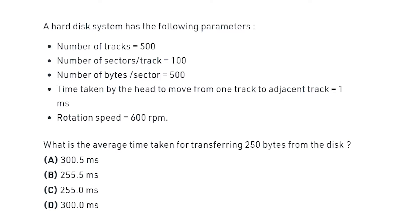A hard disk system has the following parameters: number of tracks equals 500, number of sectors per track equals 100, number of bytes per sector is 500. The time taken by head to move from one track to adjacent track is 1 millisecond. Rotational speed is 600 RPM. What is the average time taken for transferring 250 bytes from the disk?